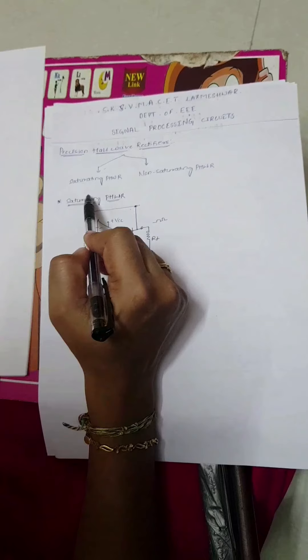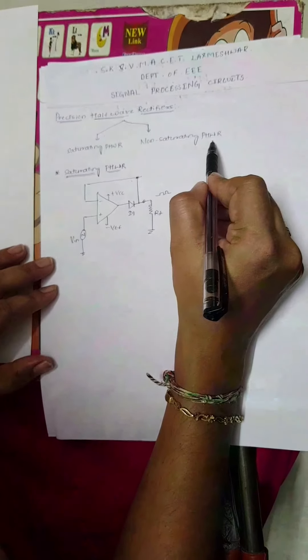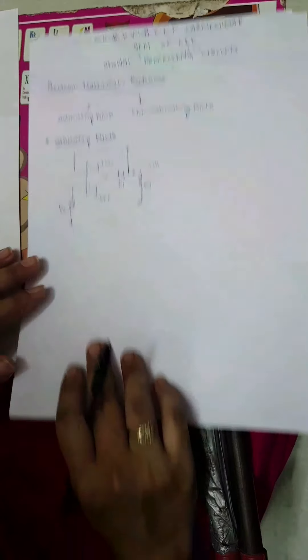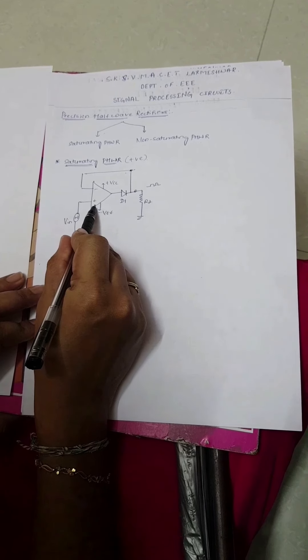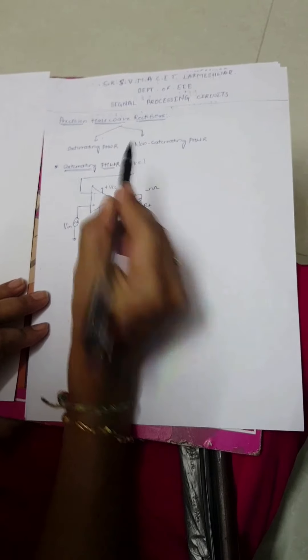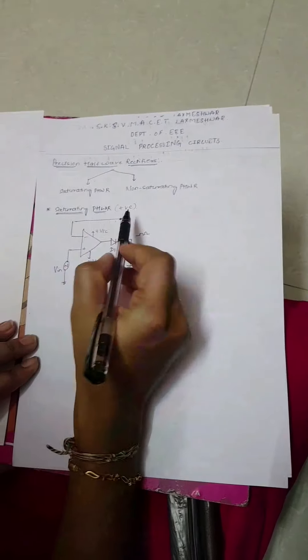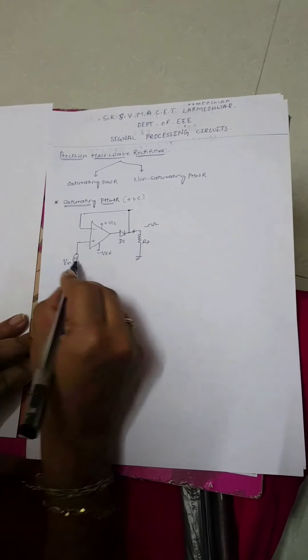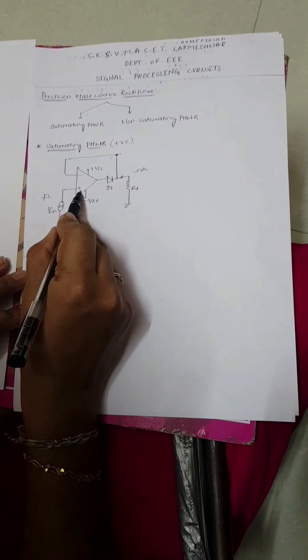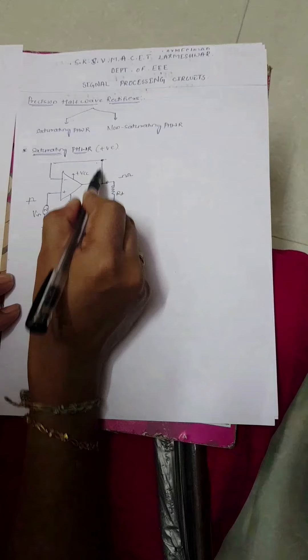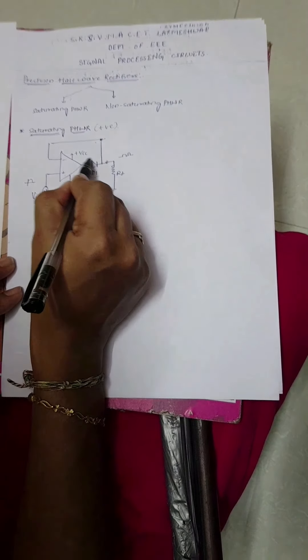This is the circuit diagram of a precision half wave rectifier. There are two types: saturating type and non-saturating type precision half wave rectifier. We shall first see the saturating type. This is the positive saturating type because the input is given to the positive terminal — we can also call it the non-inverting saturating precision half wave rectifier. The input is applied to the non-inverting terminal, diode D1 is connected at the output side with feedback. This circuit acts as a voltage follower but with diode D1.